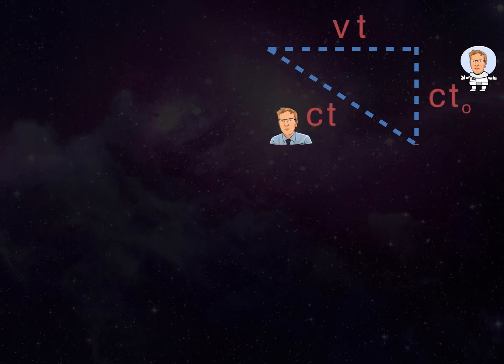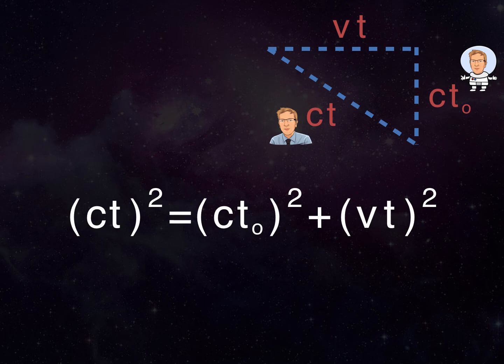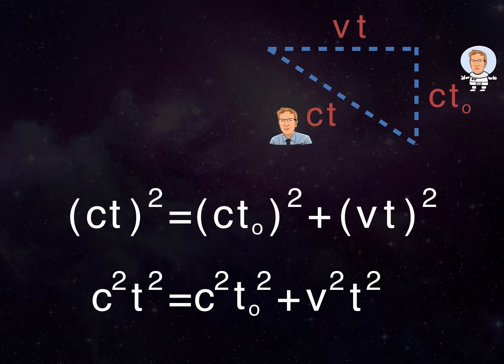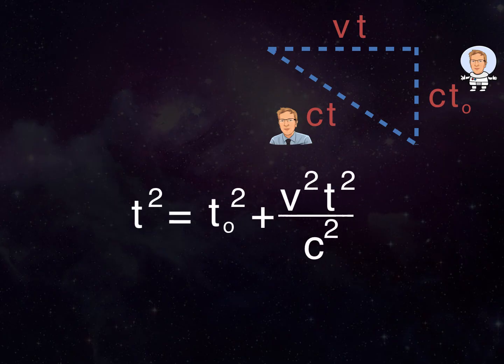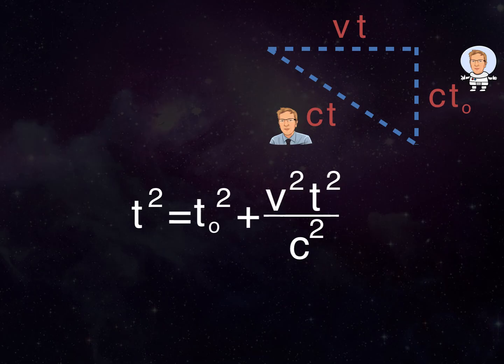Using Pythagoras, then, we can see that C T squared is equal to C T0 squared plus V T squared. If we multiply out the brackets, we get this: C squared T squared is equal to C squared T0 squared plus V squared T squared. We'll then divide both sides by C squared. Next, we can subtract V squared T squared over C squared from both sides, giving us this.